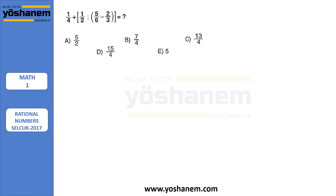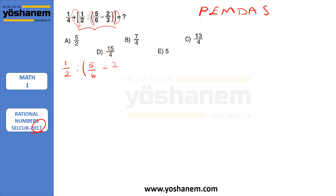After giving brief information about rational numbers, we are ready to solve some basic questions. This question is from 2017. I'm going to write PEMDAS here first. There are parentheses here, so parentheses come first. That's why I am going to solve this part first: 1 over 2, and then 5 over 6 minus 2 over 3. There is a division and parentheses, so I need to solve the parenthesis part first.